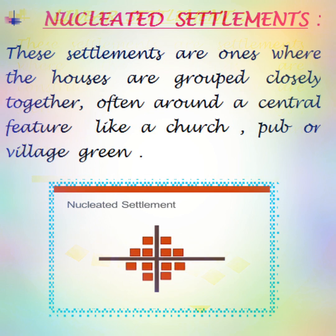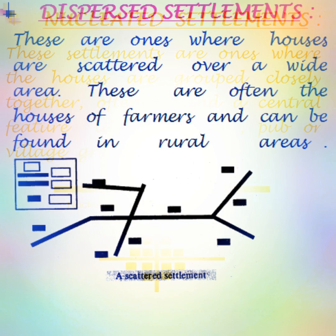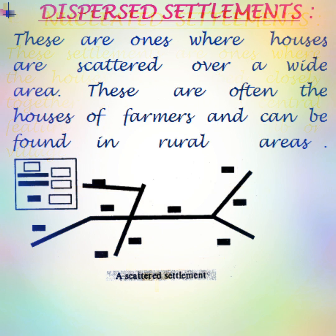The second one is nucleated settlements. These are ones where houses are grouped closely together, often around a central feature like a church, pub, or village green.